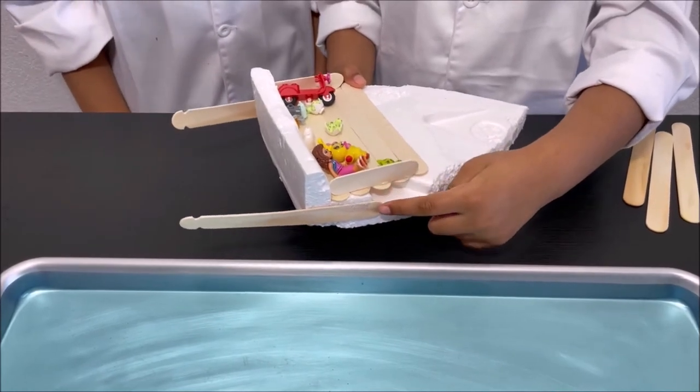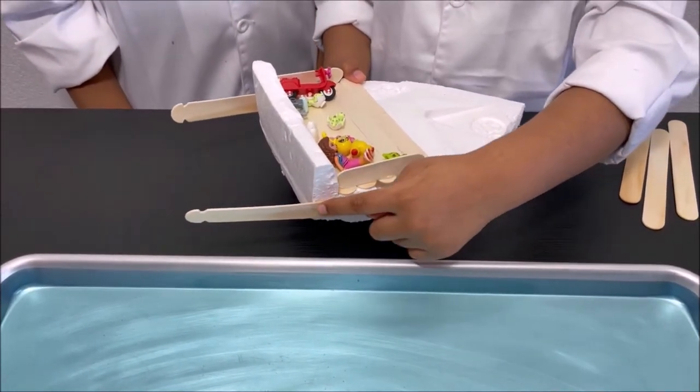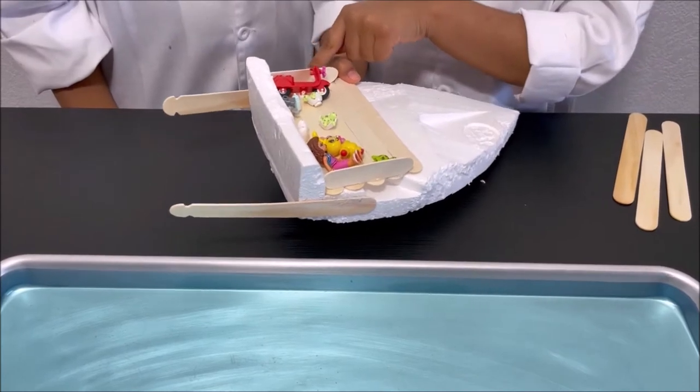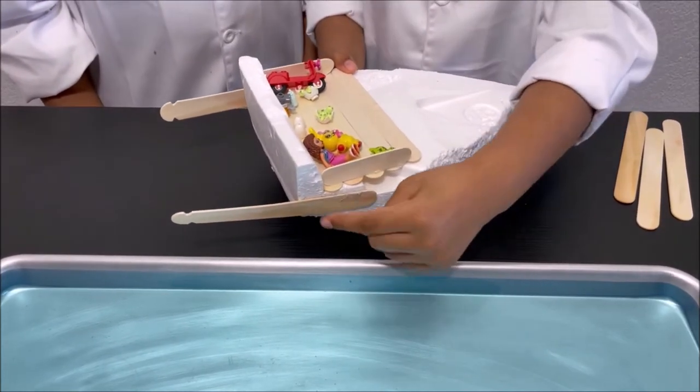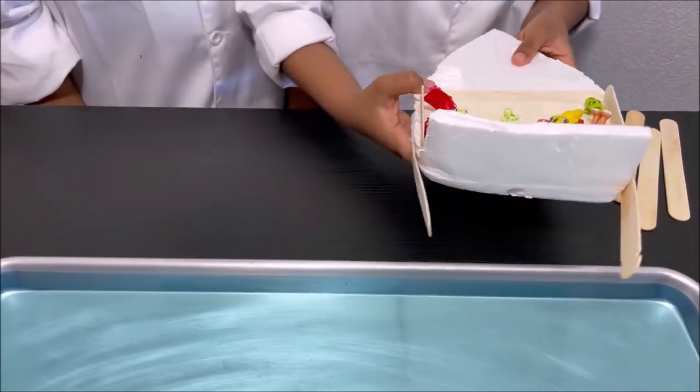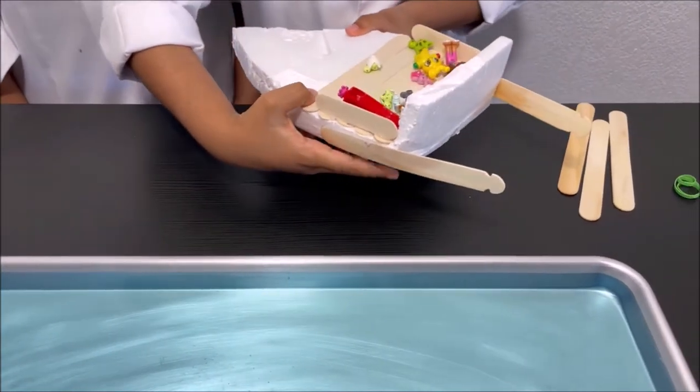I got two popsicle sticks and I stuck them on the sides of the boat with hot glue. One over here and the other one over here.